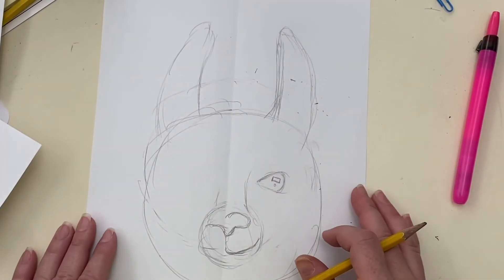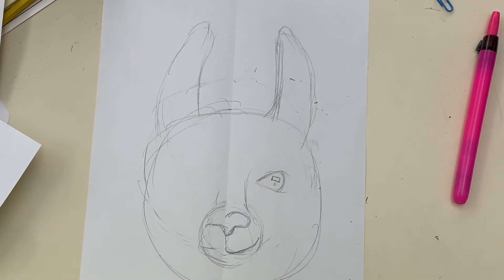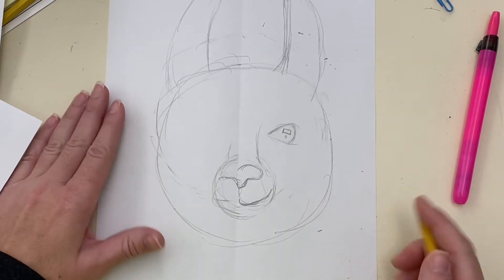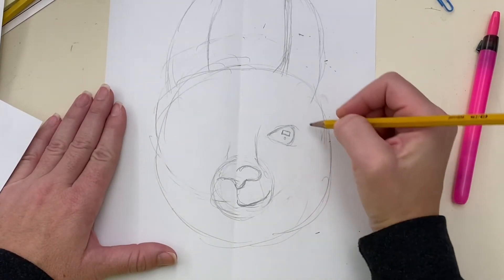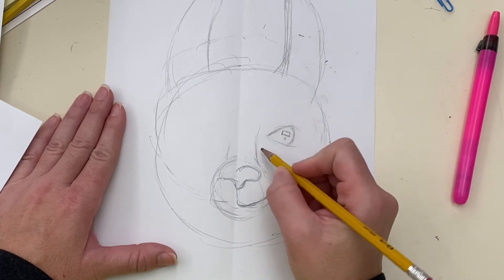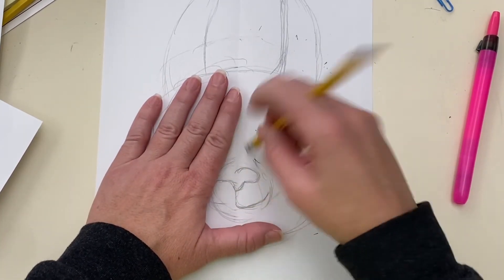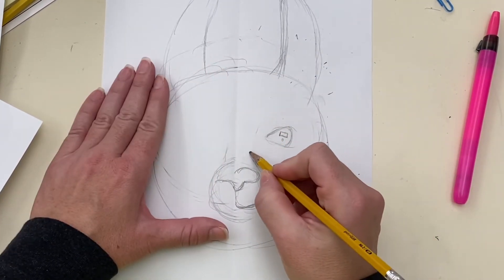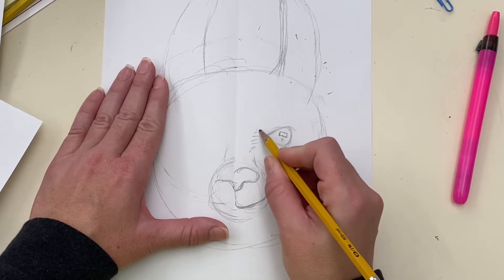So you have to pay attention to the direction of the hair on your photograph. For instance, my little llama, the hairs right here are short so I'm not going to make them super long but they go in this direction.